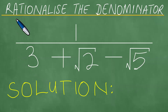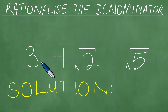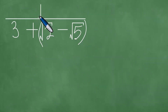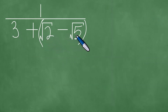We need to proceed to rationalize the denominator, given 1 over 3 plus the square root of 2 minus the square root of 5. We present a solution to this problem in a step-by-step fashion. Given 1 over 3 plus the square root of 2 minus the square root of 5 in parenthesis.